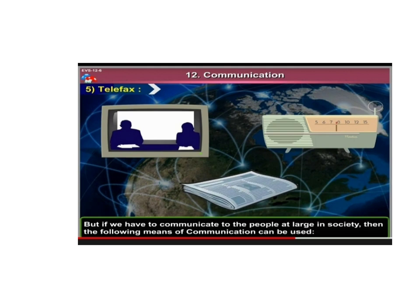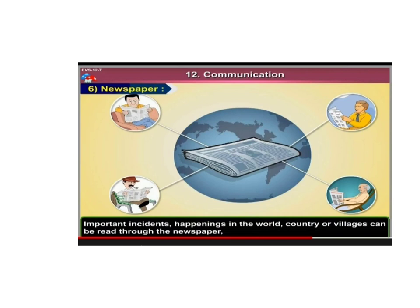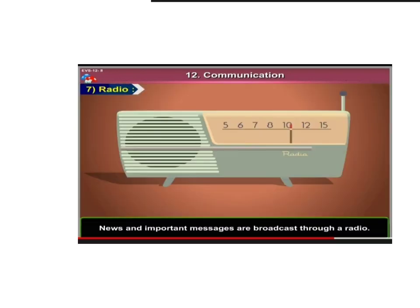But if we have to communicate to many people at a time — to the people at large in society — then other means of communication are used, like TV, radio, and newspaper. Important incidents and happenings in the world, country, or village can be read through the newspaper. Newspaper is a very good source of communication because it gives us information about cricket, cinema, government, marriages, and different aspects of our society.